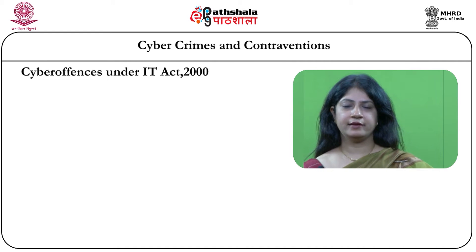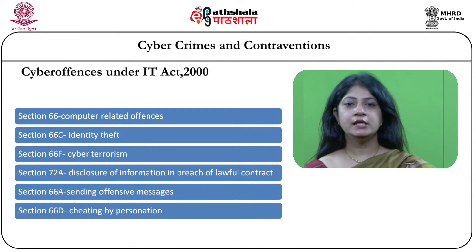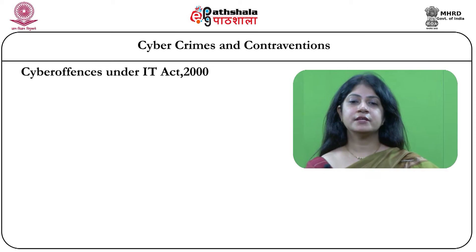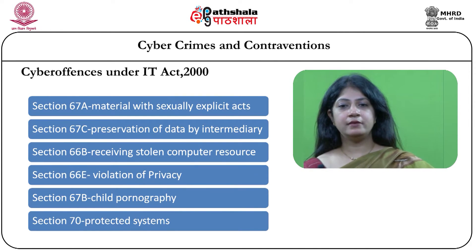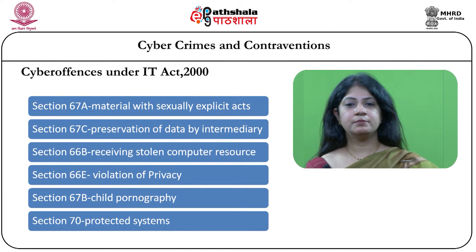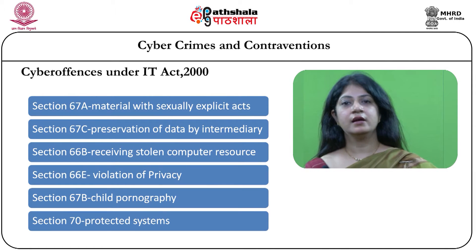We also have other sections under the IT Act: Section 66C dealing with identity theft, 66F dealing with cyber terrorism, 72 dealing with breach of confidentiality and privacy. Section 66A particularly talks about hate speech and offensive speech which is menacing, including spamming, and 66C and D deal with cheating by personation, identity theft and such other issues. Section 67 and 67A deal in particular with sexually explicit content or pornography, 66E for violation of privacy, and 67B dealing with child pornography. Section 66B deals with stolen computer resources, which could include data and other hardware.